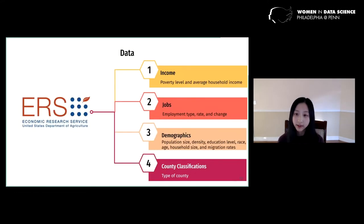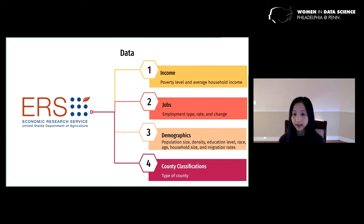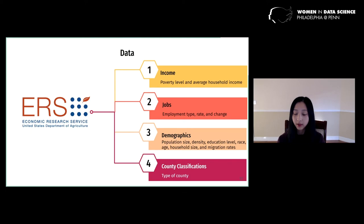The ERS website had county-level socioeconomic data with four relevant datasets on income, jobs, demographics, and county classifications. The combined data had over 200 variables, but some were the same variable measured at different times, so we only took the most recent one — for example, we only kept unemployment rate 2019. We also removed any highly correlated variables, such as total number of households in favor of total population size because they were 0.996 correlated. Finally, we removed redundant or irrelevant variables and ended up with 40 socioeconomic variables.